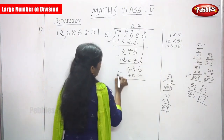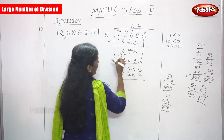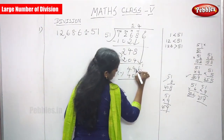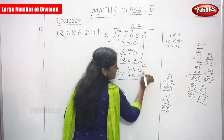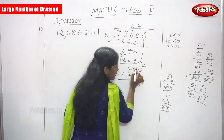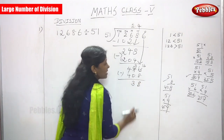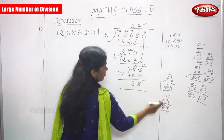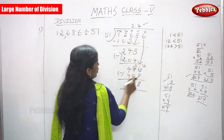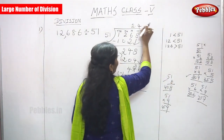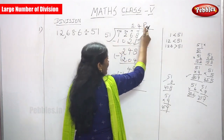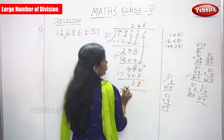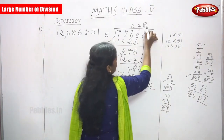Now subtract 446 minus 408. 6 minus 8 — you can't subtract, so borrow: 16 minus 8 is 8. The tens digit becomes 3; 3 minus 0 is 3. 4 minus 4 is 0. So the remainder is 38. This 38 is the remainder, and the numbers written above — 248 — form the quotient. The original number 12,686 is the dividend, and 51 is the divisor.